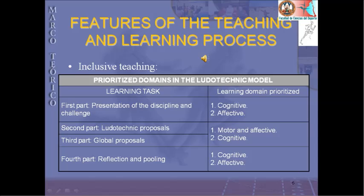Prioritized domains in the ludotechnic model. In the first part, presentation of the discipline and challenge, the learning domains prioritized are cognitive and affective. In the second and third part, through the ludotechnic proposals and global proposals, the learning domains prioritized are motor, affective, and cognitive. And finally, in the fourth part, the learning domains prioritized are cognitive and affective.